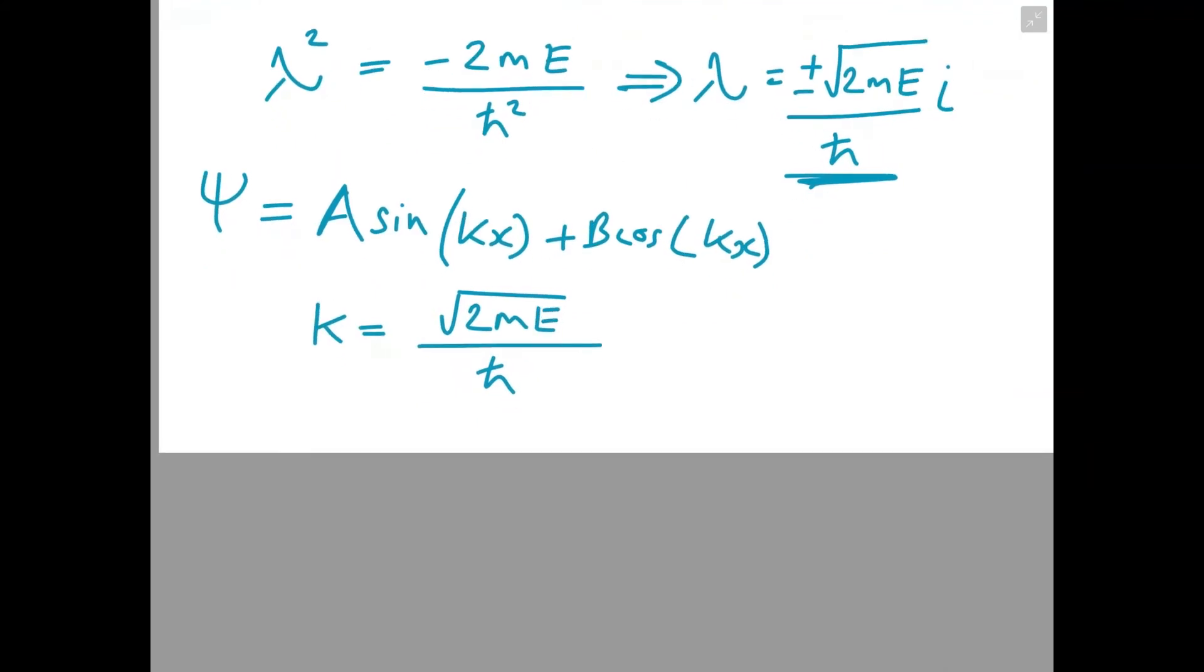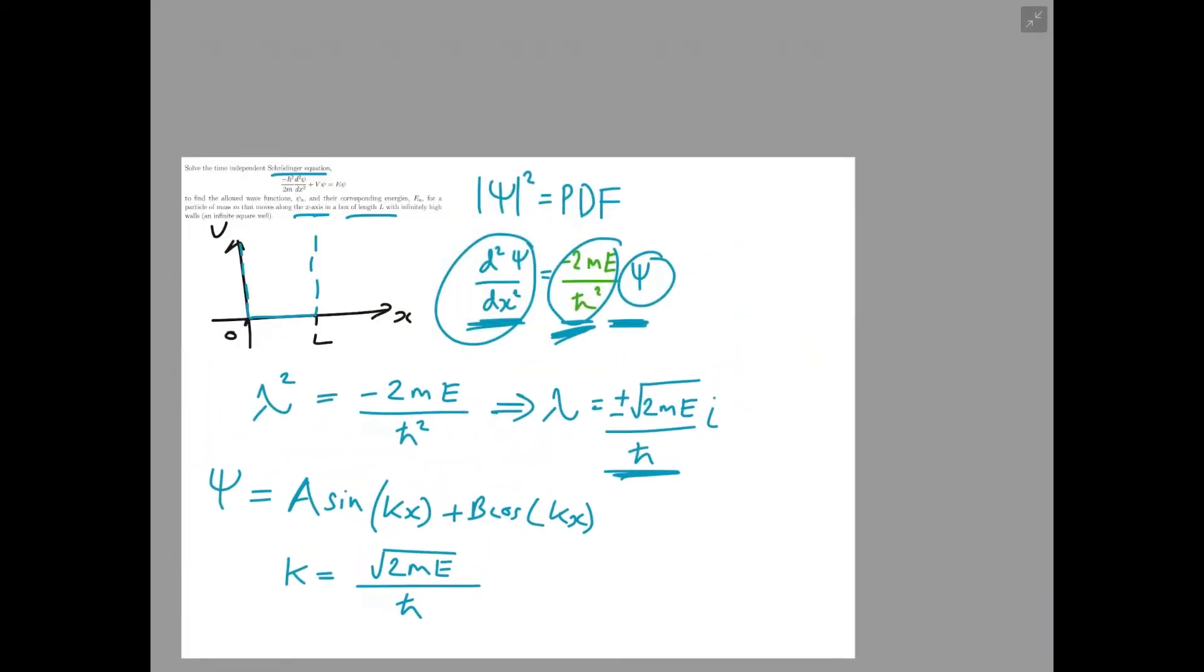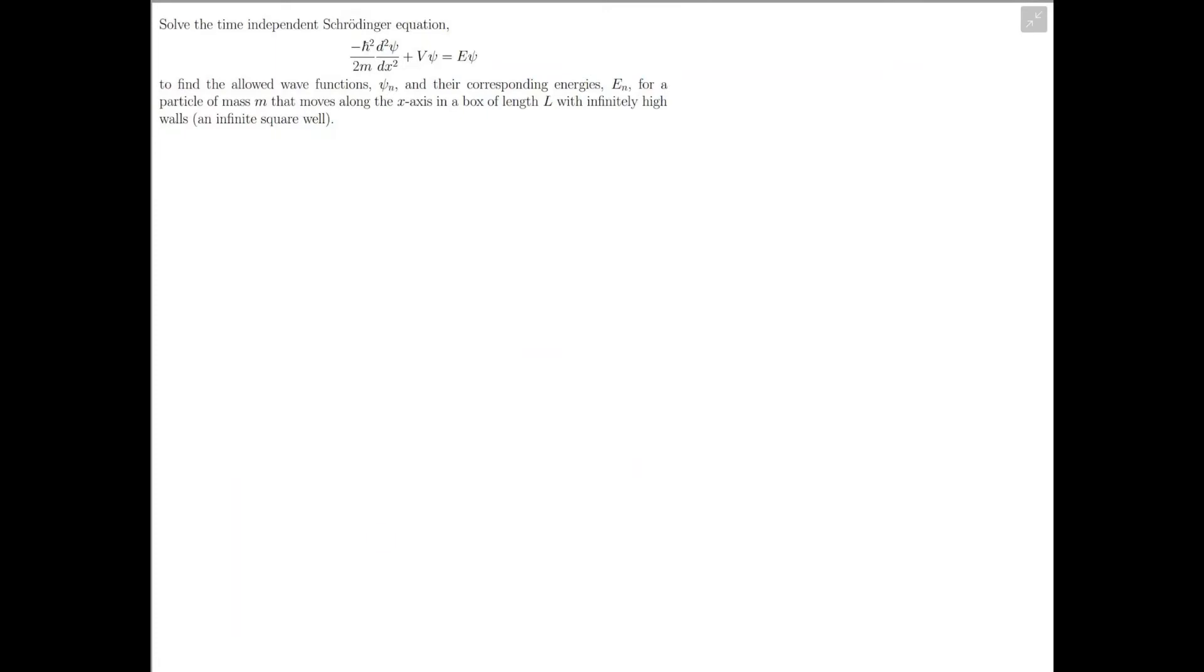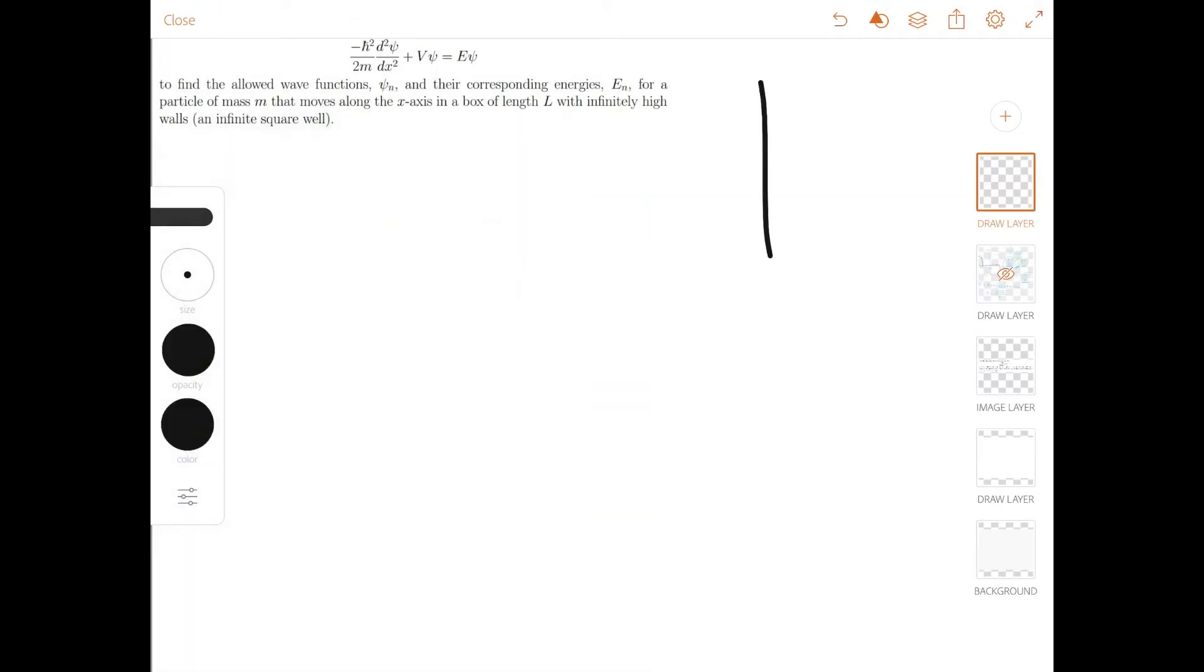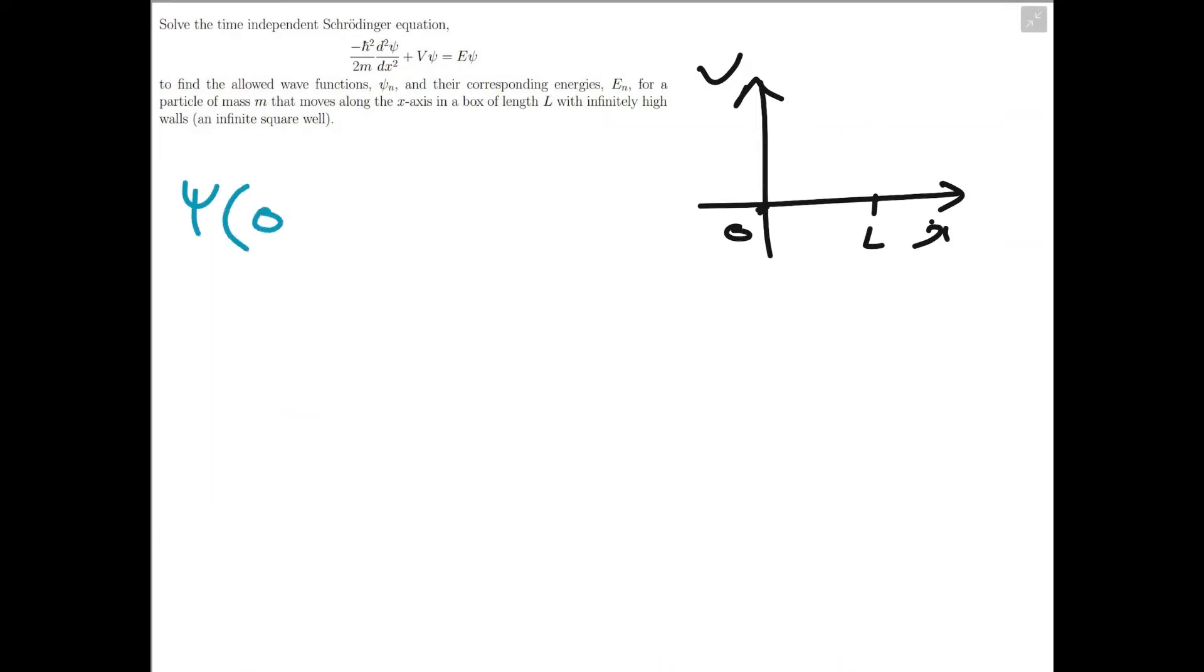So now we have the general solution for ψ. We can work out a and b using the boundary conditions on ψ. So we know that at x equals zero and x equals L, the probability of finding the particle should be zero, because that's where the potential starts to go to infinity and ψ needs to be a continuous function. So that tells us that ψ at x equals zero is equal to ψ at x equals L, and they must both be zero.